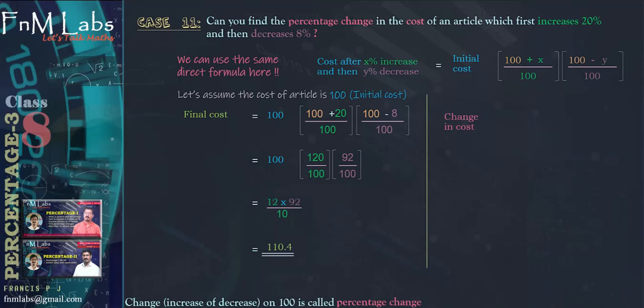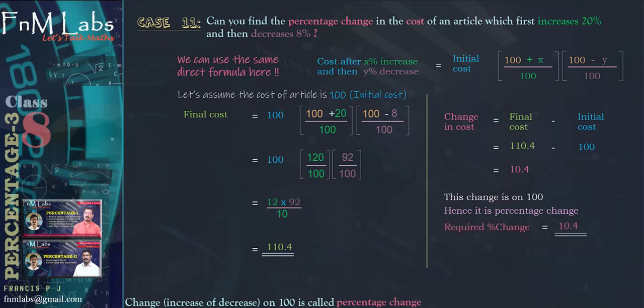So 110.4 is the final cost. We have the initial cost as 100. Change in cost is final cost minus initial cost, which is equal to 10.4. This change is on 100, since we assumed initial cost as 100. So this is the percentage change. The required percentage change is 10.4.